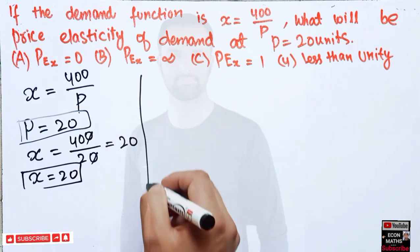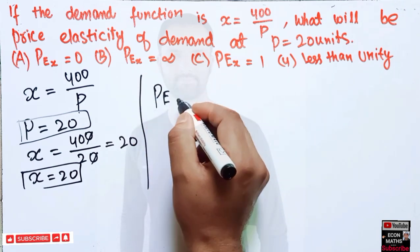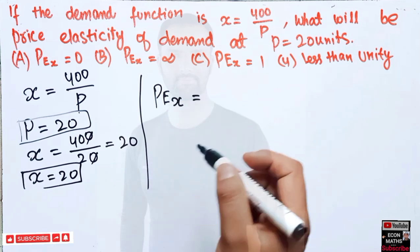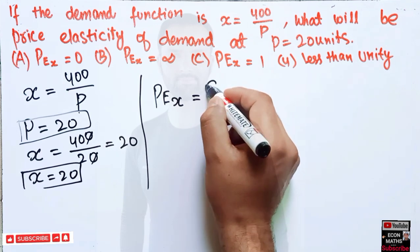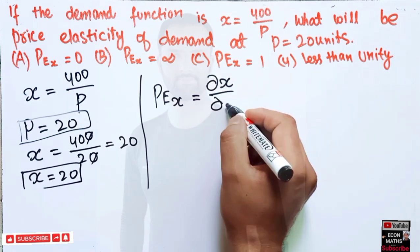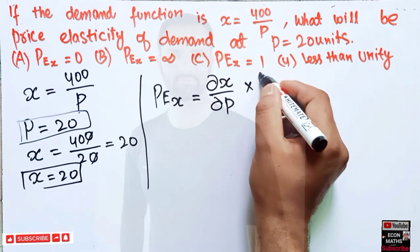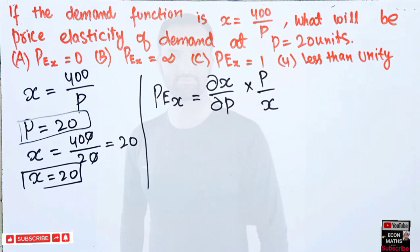Now, what is price elasticity of demand? Price elasticity for good x is given by the derivative of the demand function, that is dx upon dp with respect to price, times p upon x.